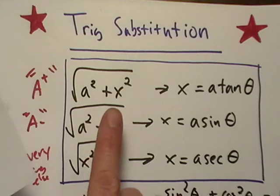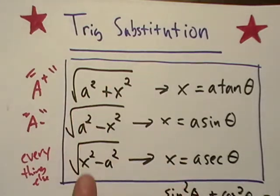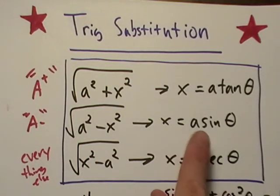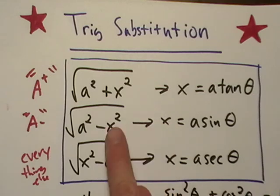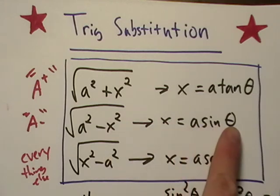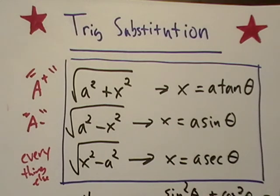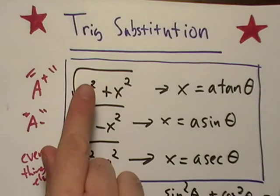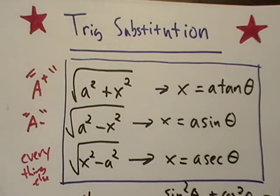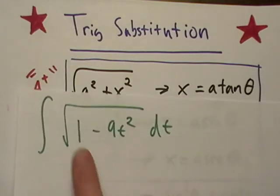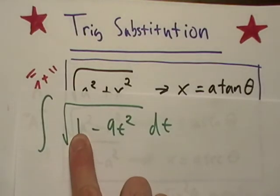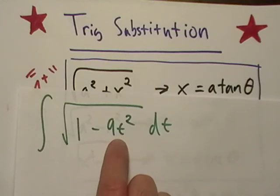It's almost the exact same thing. So when you encounter any of these situations, you'll sub x in for a sine theta. And a is just a constant. Notice there's like an a plus, a minus, yada, yada. Like for example, this one, a would be 1, x would be equal to 3t. So we would use the sine identity.